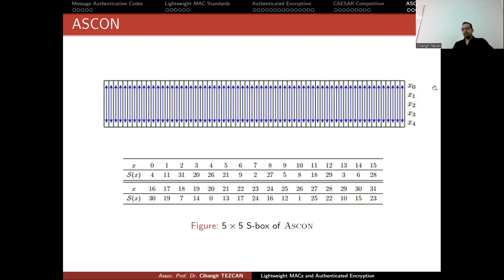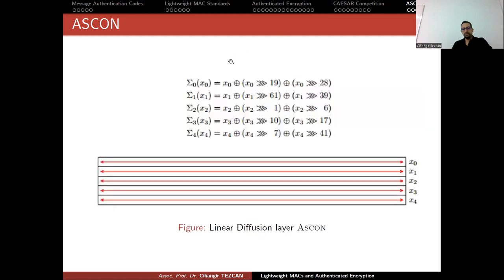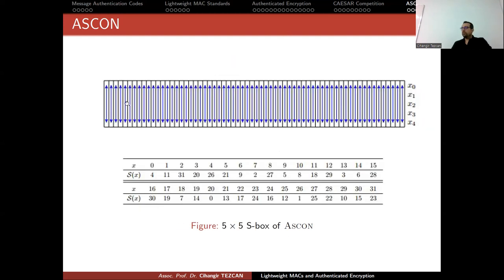Since it is defined on these XIs, instead of performing those operations on bits, you can perform those operations on rows. So instead of 64 table lookups, you can perform all of these S-box operations in 21 XOR operations. We will see in our implementation. This is for confusion.